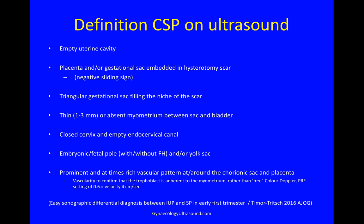In summary, the ultrasound definition for a caesarean scar pregnancy is: an empty uterine cavity; placenta or trophoblast embedded in the caesarean scar with a negative sliding sign; triangular gestational sac filling the niche; thin or no overlying myometrium; a closed cervix; a yolk sac and/or an embryo with or without fetal heart; and prominent vascularity where the trophoblast is invading the anterior uterine wall.